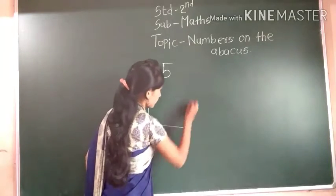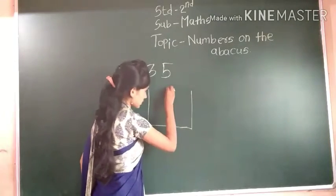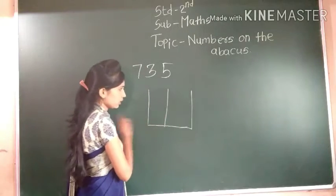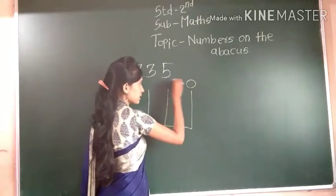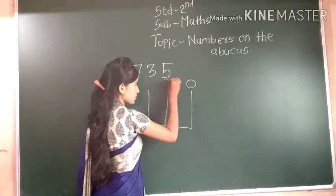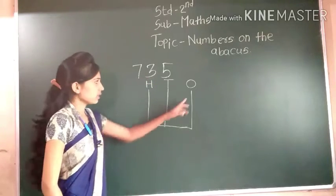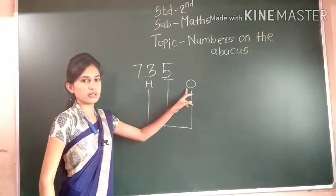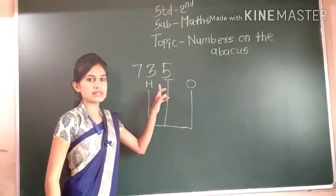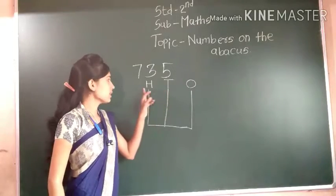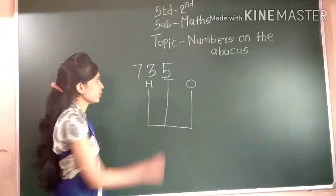Here are 3 spikes: 1, 2, 3 spikes. 1's place, 10's place, and 100's place. Capital O denotes 1's place, capital T denotes 10's place, and capital H denotes 100's place.